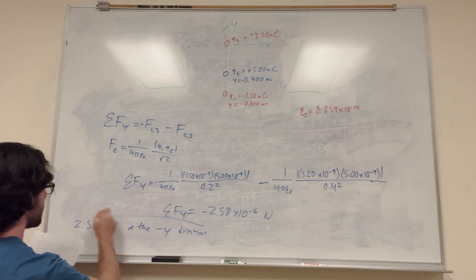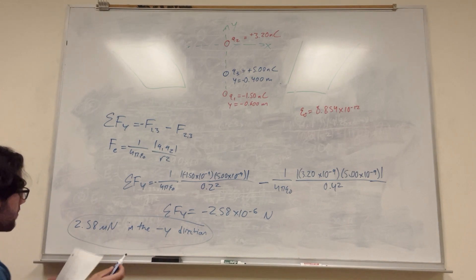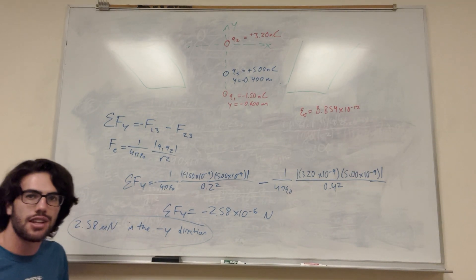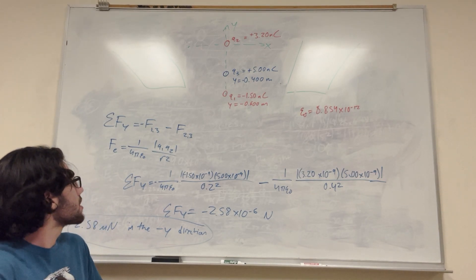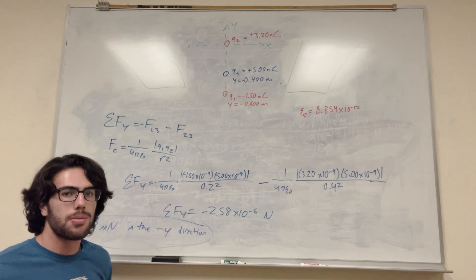We know it's pulling straight down, so there it is. 2.58 micronewtons in the negative y direction. So that's how you solve this kind of problem. Just adding your forces is pretty typical, and make sure you know this formula, and then you can do all these problems.